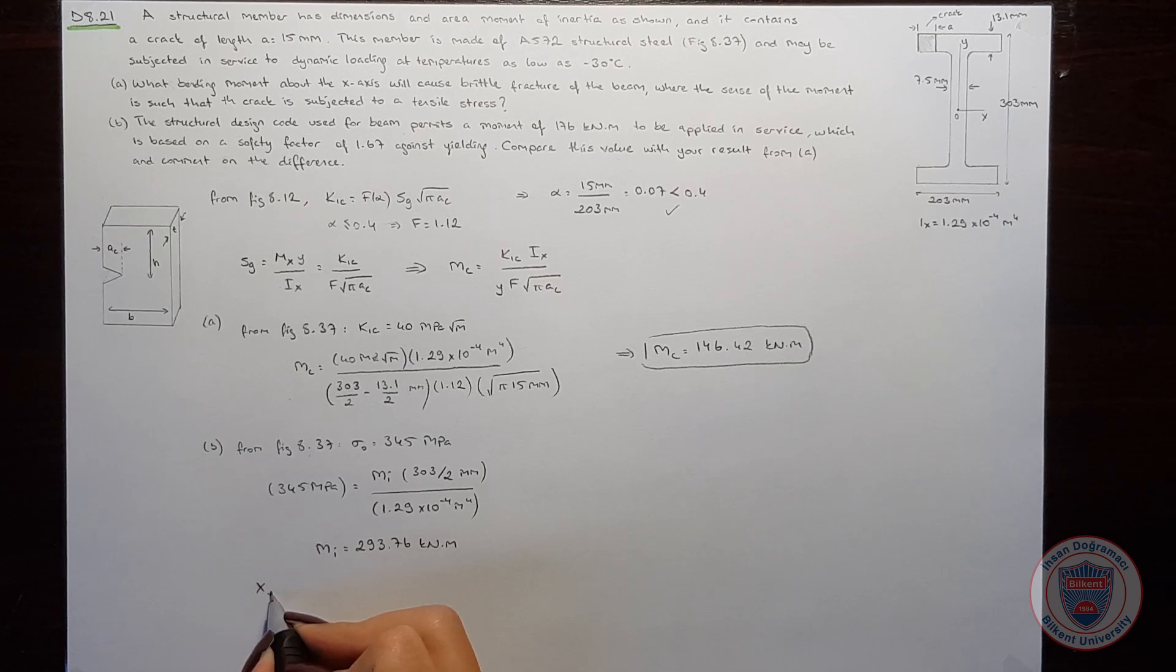We know that the safety factor against yielding strength is equal to mI over m, and we know that this is equal to 1.67. So we will obtain m equal to 175.9 kNm.